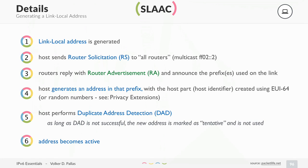Once you have received the router advertisement with the prefixes, you can generate a global IPv6 address from this prefix. The start of the address is not FE80 anymore, but it is the network prefix that was announced. The rest is also configurable by EUI-64, like with link local, or you can use random numbers with privacy extensions. So the way the address is generated is just the same, just that FE80 is replaced by your real public network that is announced by the router.